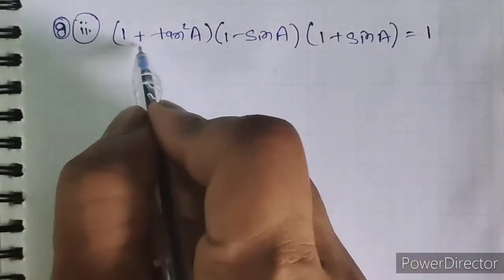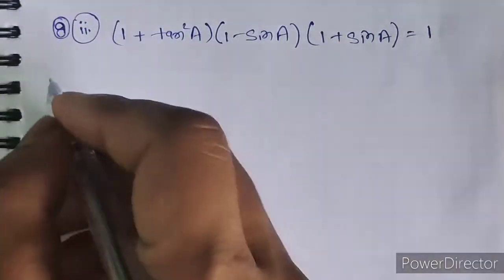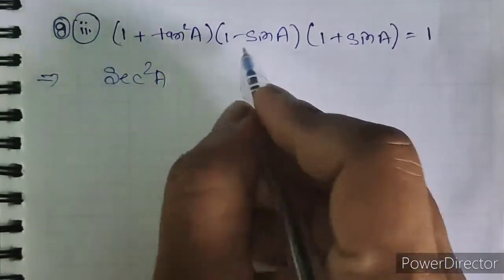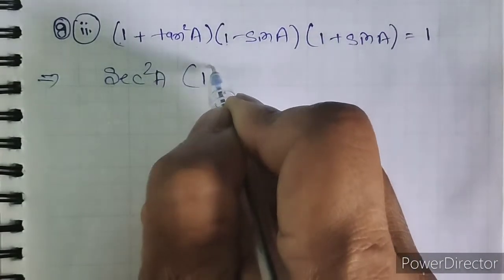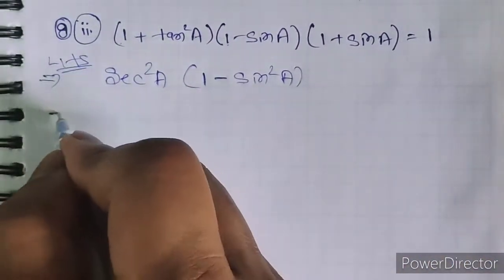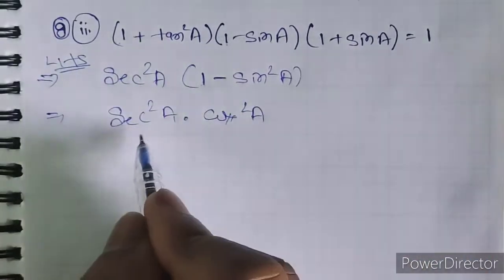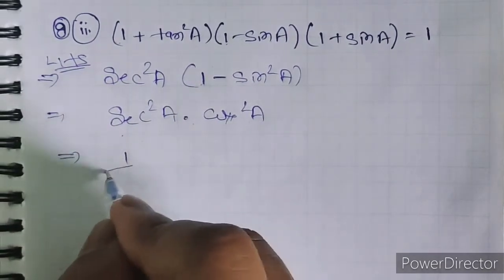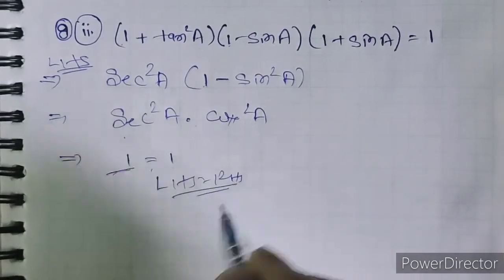Question 8 part 2: prove that (1 + tan² A)(1 - sin A)(1 + sin A) = 1. We know 1 + tan² theta equals sec² A. And (1 - sin A)(1 + sin A) is A minus B times A plus B, which equals 1 - sin² A equals cos² A. So sec² A into cos² A equals 1. LHS equals RHS, proved.